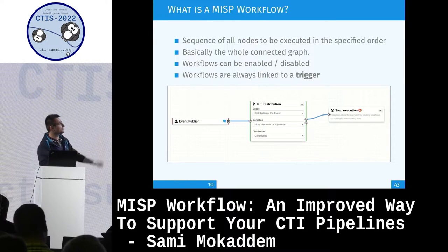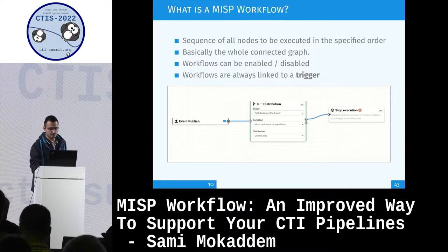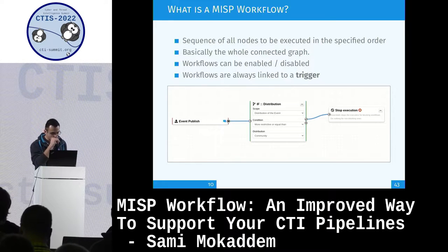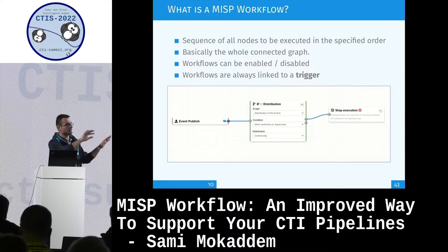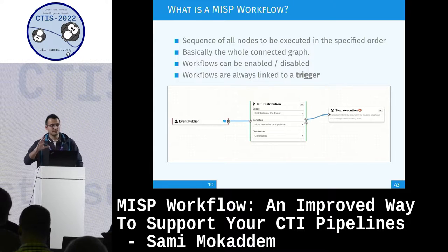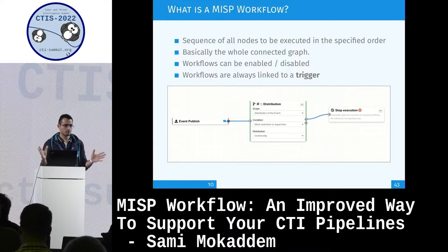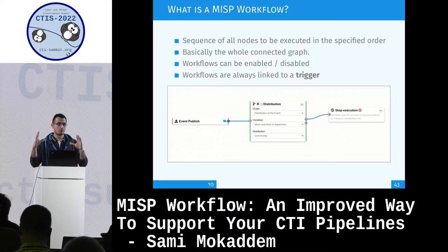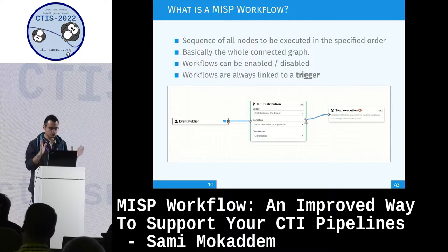This is what a MISP workflow looks like - basically a connected graph where you can have multiple execution paths depending on whether you add conditions. It's a sequence of all nodes to be executed in order. As a side note, workflows are always linked to a trigger, so you cannot have a floating workflow without an entry point. Only one trigger can have one workflow - you cannot have multiple workflows per trigger.